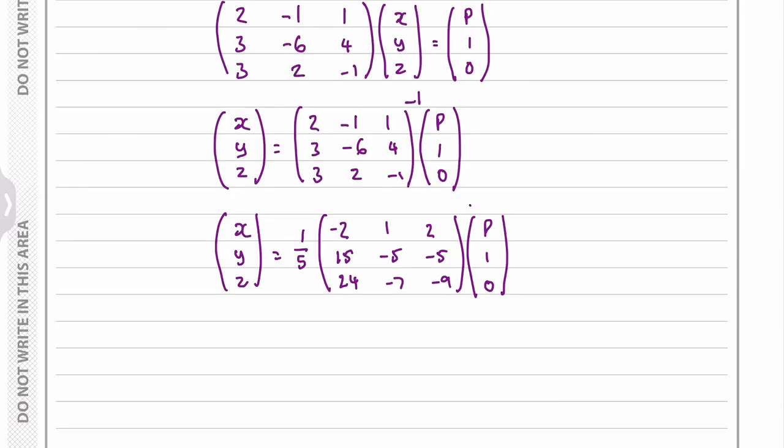So at this point I'm going to move this division of five to the left hand side and then we can multiply the first row by this column, the second row by the column, and the third row by the column.